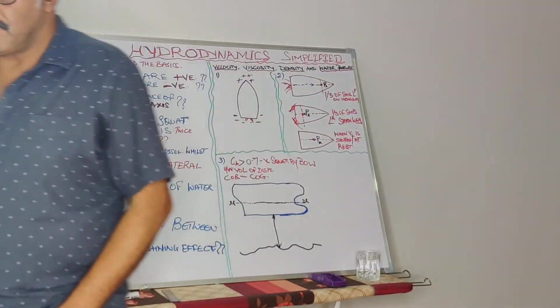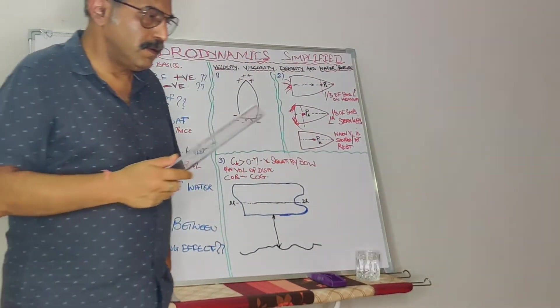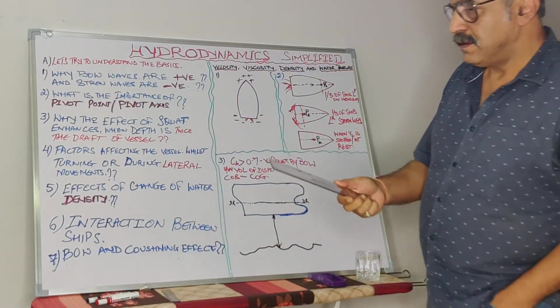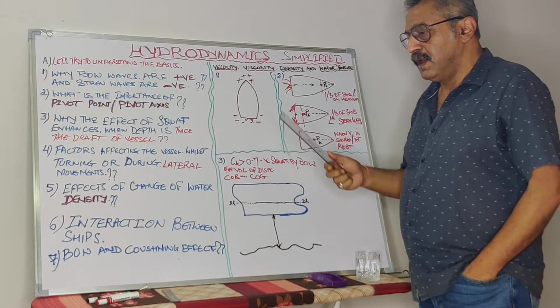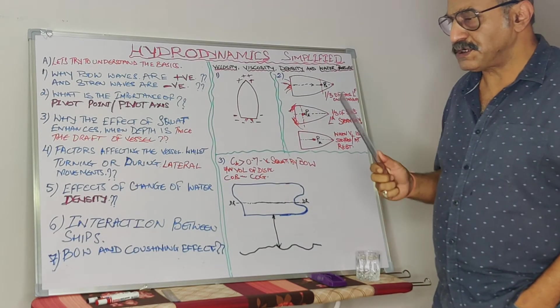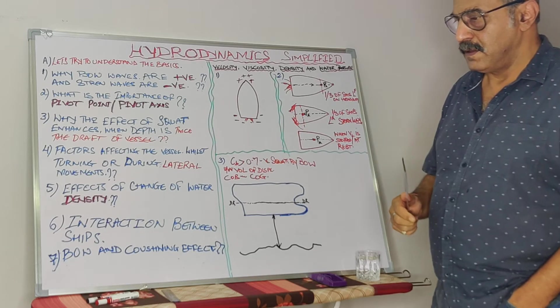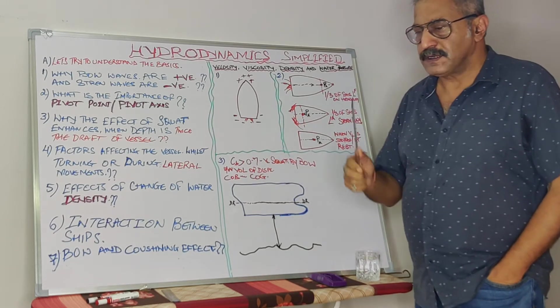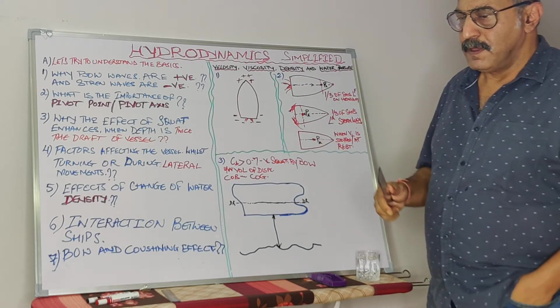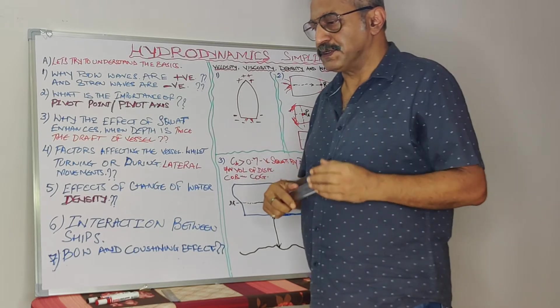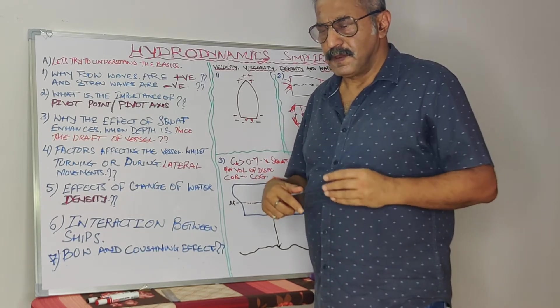It depends where you are or where the vessel is. If we take a small example, when the water is passing through a pipeline, gushing through a pipeline, the pressure is the most in the center, but on the walls of the pipelines it reduces. This is just a beginning.